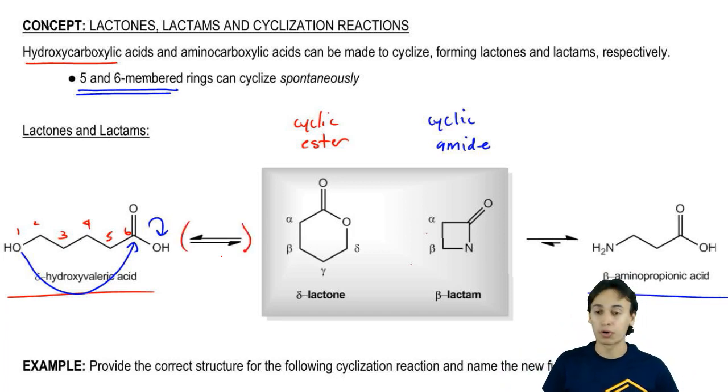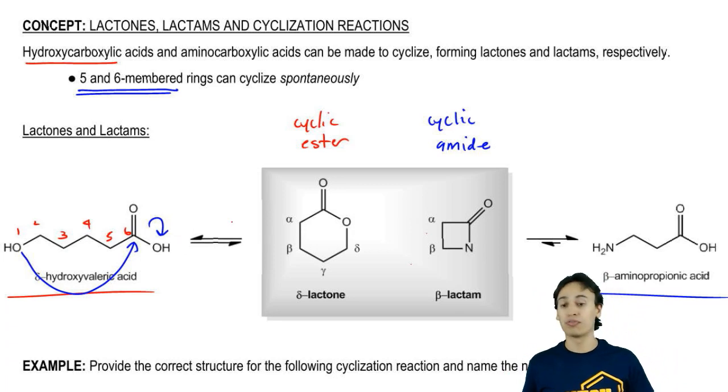These equilibrium arrows that I drew are purposeful. I showed that they're pretty much in perfect equilibrium because if you can make a five or six-membered lactone, that's definitely going to form an equilibrium. In fact, that actually happens in our bodies. In our bodies, sugars are forming lactones all the time. Sugars can form six-membered rings and they form lactones all the time in your body.